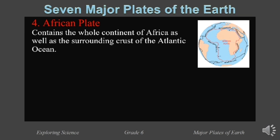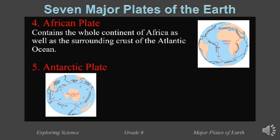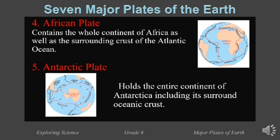Fifth, it is the Antarctic plate. The Antarctic plate holds the entire continent of Antarctica, including its surrounding oceanic crust. This plate is surrounded by parts of the African, Australian, Pacific, and South American plates.